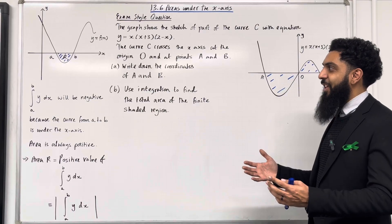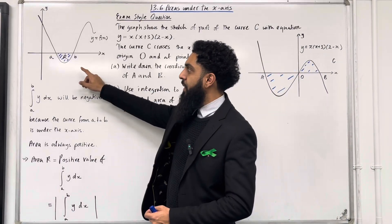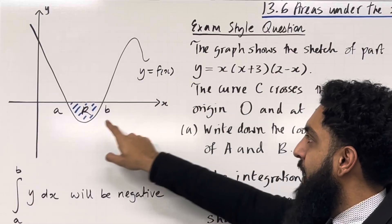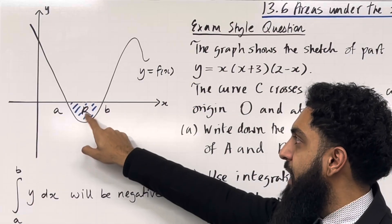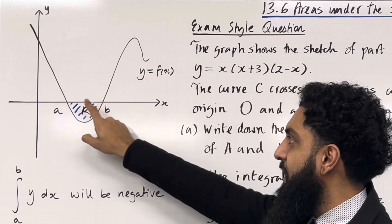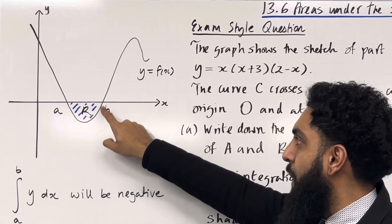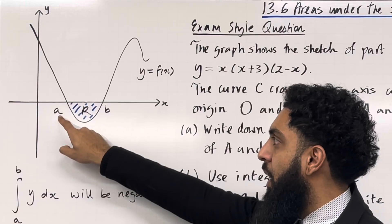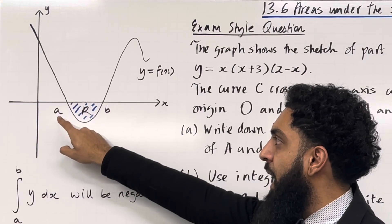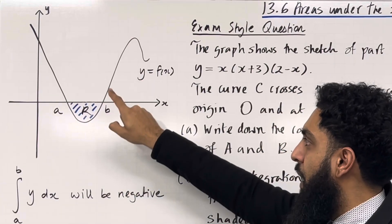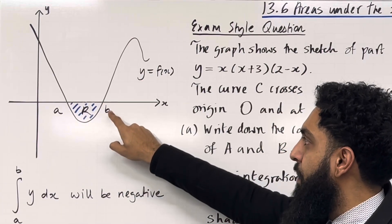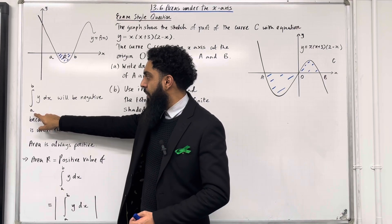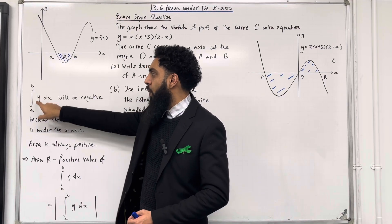Consider the following coordinate grid. We've got the curve y equals f of x. The area R is bounded by the positive x-axis and the curve y equals f of x. The lower limit of the area R is x equals a, and the upper limit of the area R is x equals b. The area R is given by the integral from a to b of y dx.